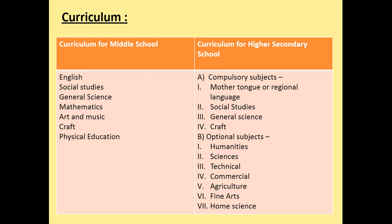Regarding the curriculum, the middle school curriculum includes English, social studies, general science, mathematics, art and music, craft, and physical education. The higher secondary curriculum includes two broad sections: compulsory subjects and optional subjects. Compulsory subjects are mother tongue or regional language, social studies, general science, and craft. Optional subjects include humanities, science, technical, commercial, agriculture, fine arts, and home science.